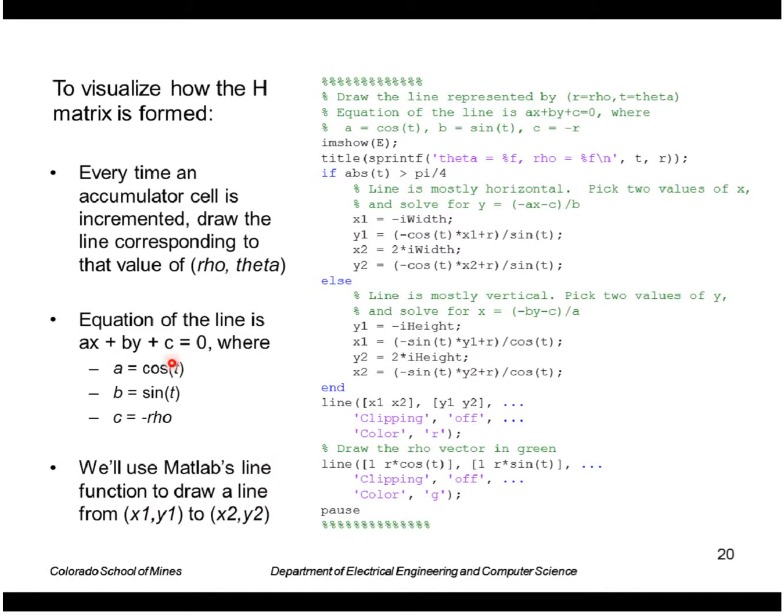And the way we'll do that is by using the equation of a line like this and recognizing that A is just cosine of theta, B is sine of theta, and C is minus rho. And then what this code does, it tests to see if the line is mostly horizontal. If it is, we want to draw from the left side of the image to the right side and calculate the values of y using this equation. If the line is mostly vertical, we'll draw from the top to the bottom and calculate the values of x according to this equation.